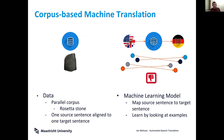We need good data to learn how to translate, and we need strong models that are able to learn how to map the source language to the target language. What we typically need in machine translation is what we refer to as a parallel corpus — you can think of it like the Rosetta Stone.